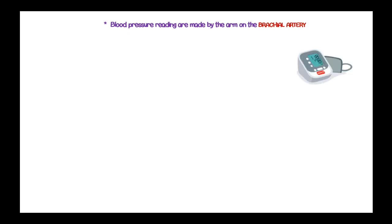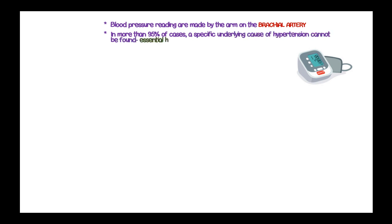Blood pressure readings are made on the arm on the brachial artery, representing the blood pressure throughout the body. In more than 95% of cases, a specific underlying cause of hypertension cannot be found, and thus this is referred to as essential hypertension or primary hypertension.